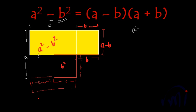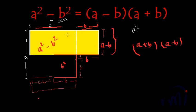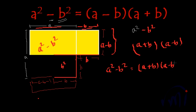This makes a rectangle whose length is equal to a plus b and width equal to a minus b. The area of this rectangle will be its length, that is a plus b, multiplied by a minus b. And this rectangle is actually formed from a square minus b square. So from here we get a square minus b square is equal to a plus b multiplied by a minus b.